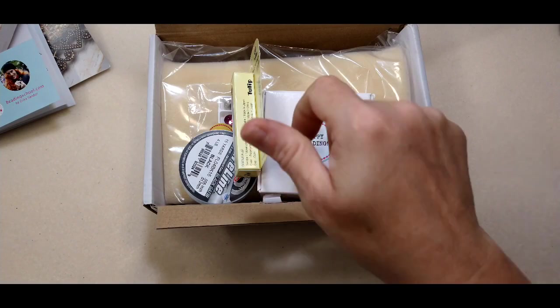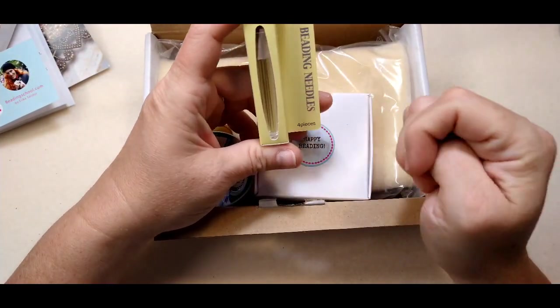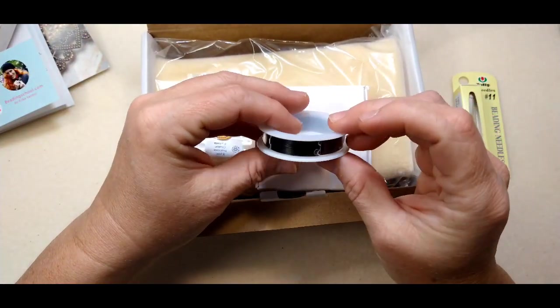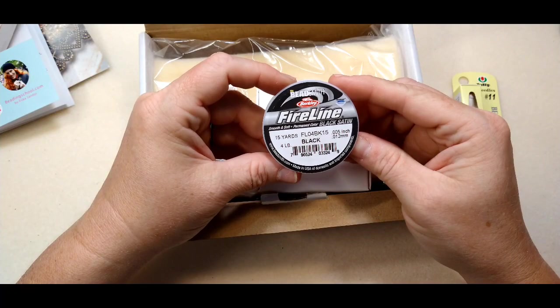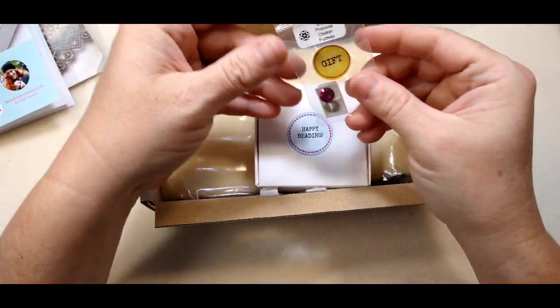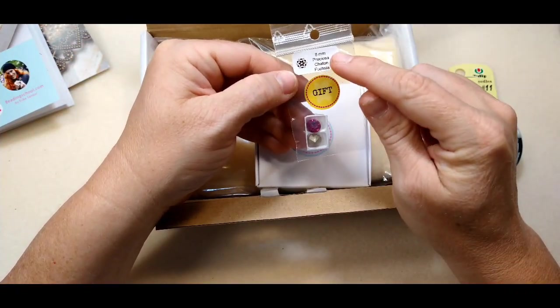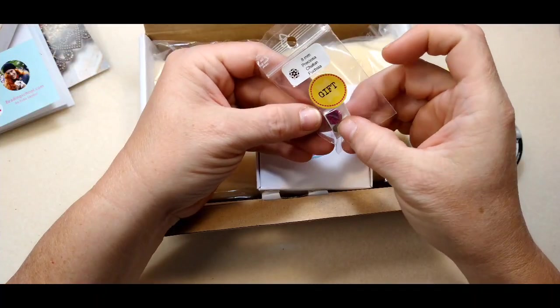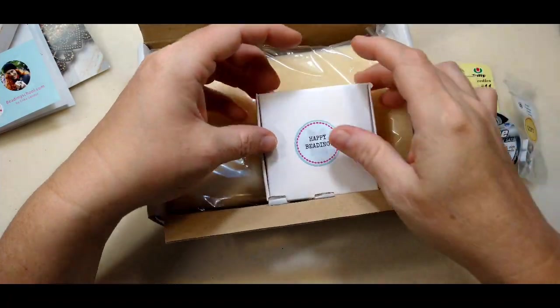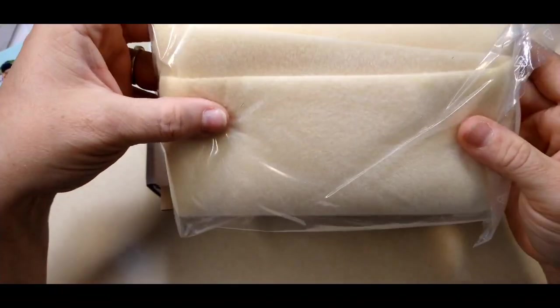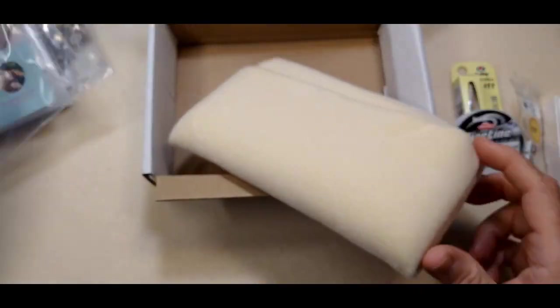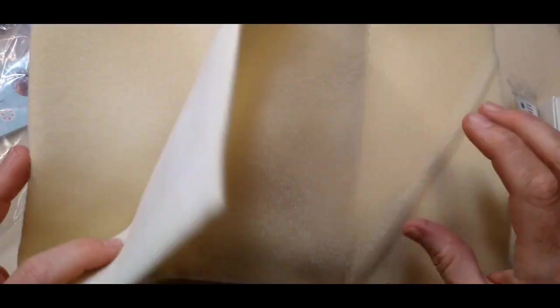So we have got some tulip size 11 beading needles. There's four of them in there. We've got some fireline in black. So this is black, four pound fireline. There are, this is a special gift. It says eight millimeter preciosa chaton in fuchsia. Those are pretty. Look at that. And look at this. She's even included in this box, a beading mat. So how nice is this? I mean, you literally are going to have everything that you need to make this.